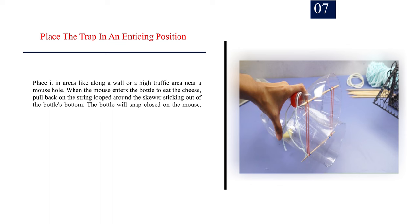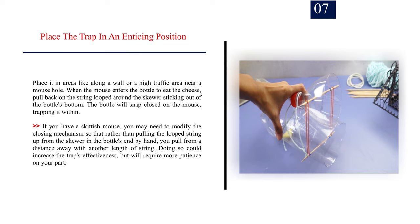Number 7: Place the trap in an enticing position. Place it in areas like along a wall or a high traffic area near a mouse hole. When the mouse enters the bottle to eat the cheese, pull back on the string looped around the skewer sticking out of the bottle's bottom. The bottle will snap closed on the mouse, trapping it within. If you have a skittish mouse, you may need to modify the closing mechanism so that rather than pulling the looped string up from the skewer in the bottle's end by hand, you pull from a distance away with another length of string. Doing so could increase the trap's effectiveness, but will require more patience on your part.